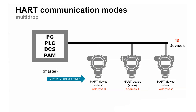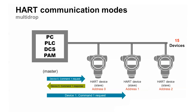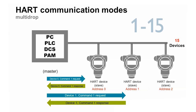The HART protocol permits all-digital communication with field devices in multi-drop network configurations of up to 15 devices. Each HART device must have a unique polling address from 1 to 15 for proper operation in multi-drop mode.